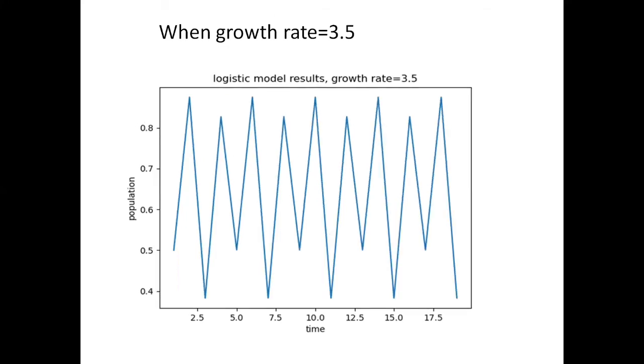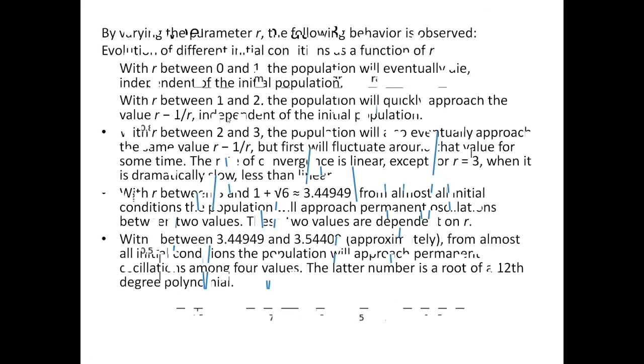With r between 3.449 and 3.544 approximately for almost all the initial conditions, the population will approach permanent oscillations among four values. One, two, three, and four. As you can see over here, these are the four values.